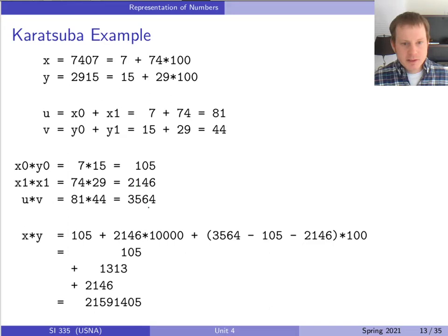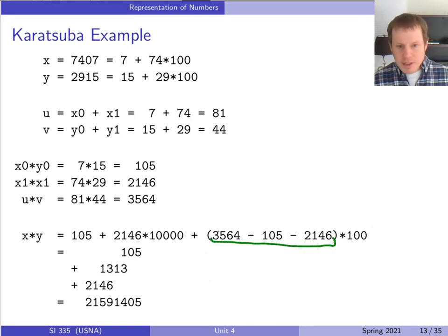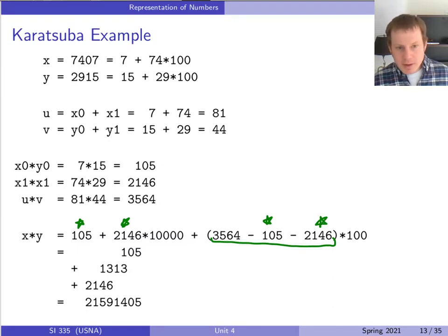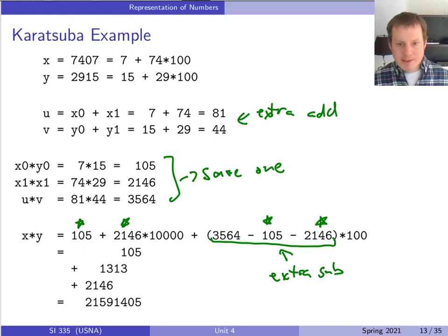We have to combine everything back together. The three results of the recursive calls are 105, 2146, and 3564. When we add it all up, we can see that the middle term reuses 105 and reuses 2146. So it's like doing a little bit of extra addition at the beginning and a little bit of extra subtraction at the end in order to reduce the number of multiplications — saving one recursive multiplication overall.